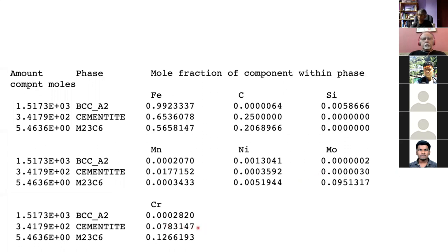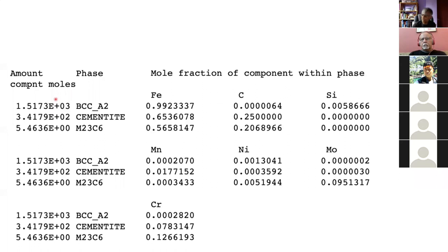For example, cementite has that much iron and about one-quarter mole fraction of carbon — as expected for Fe3C, which should be 0.75 — but we also have manganese, nickel, and chromium inside the cementite. Adding those up gives approximately 0.75. We have the chemical compositions and quantities of individual phases. You can use moles or weight percent or whatever you prefer.